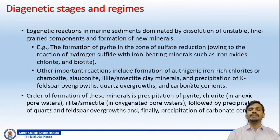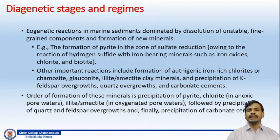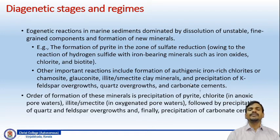Eogenetic reactions in marine sediments are dominated by dissolution of unstable fine-grained components and formation of new minerals. An example is the formation of pyrite in the zone of sulfate reduction, owing to reaction of hydrogen sulfide with iron-bearing minerals such as iron oxides, chlorite, and biotite. The composition of pyrite is FeS2 — it is an iron sulfide mineral. Other important reactions include formation of authigenic iron-rich chlorites or chamosite, glauconite, illite or smectite clay minerals, and precipitation of potassium feldspar overgrowths, quartz overgrowths, and carbonate cements.